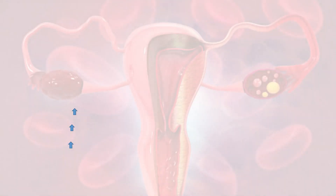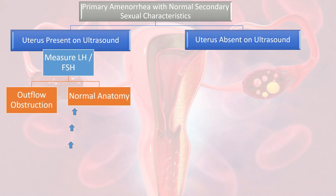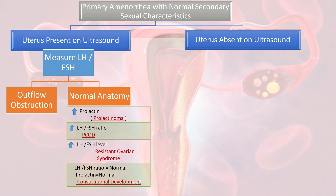In patients with primary amenorrhea with normal secondary sexual characteristics, we perform ultrasound. The uterus may be present or absent. When the uterus is present, we measure LH and FSH levels. There may be outflow obstruction or normal anatomy. Normal anatomy with increased prolactin indicates prolactinoma, and when the LH-to-FSH ratio is high, that indicates polycystic ovarian disease.